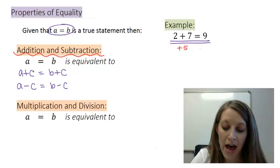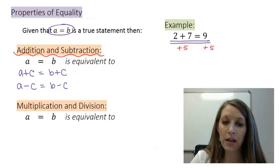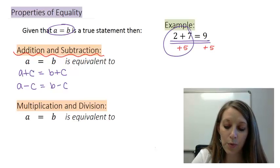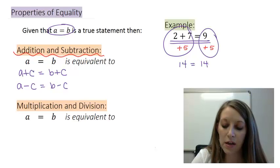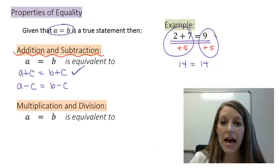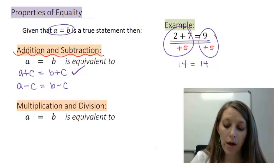So for example, I can add 5 to both sides of my equal sign here, and I still end up with a true equation. On the left, 2 plus 7 plus 5 gives me 14, and on the right, 9 plus 5 gives me 14. So we see that this addition property holds. I can add something to both sides, and it still remains a true equation.